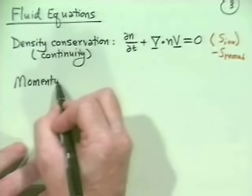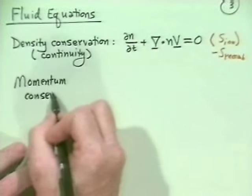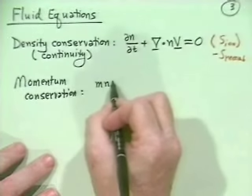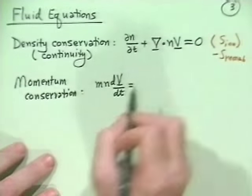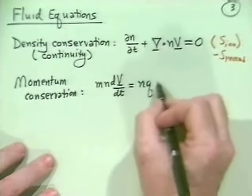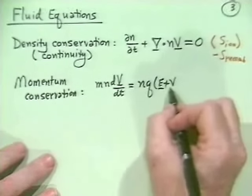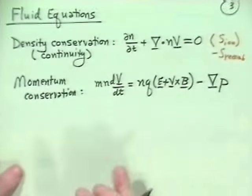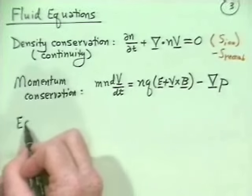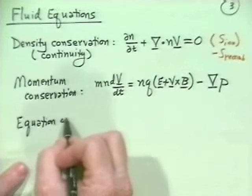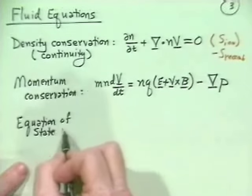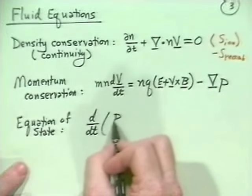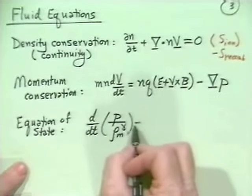The next equation is momentum conservation. The inertia term mn·dV/dt equals the Lorentz force density nqE plus nqV×B, minus the gradient of pressure. Finally, we have the equation of state: d/dt of (p/ρ_mass^γ) = 0, which says there's no entropy production on the timescale of interest.